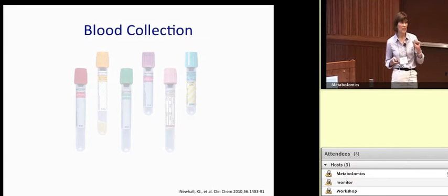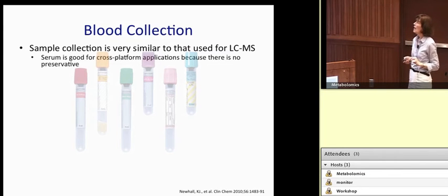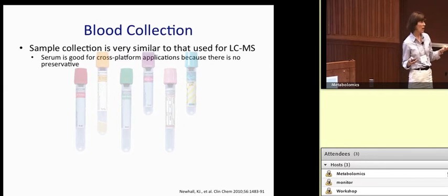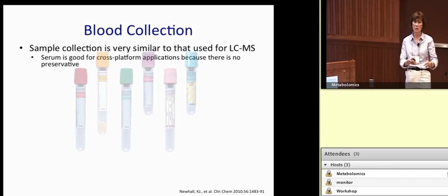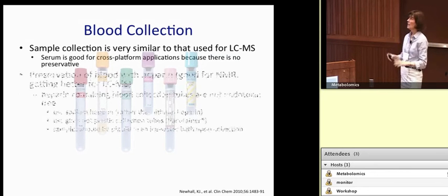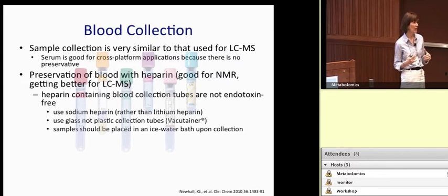A few things about sample collection — essentially the principles are the same for NMR as for LC-MS, with some minor differences. Serum is a great cross-platform biofluid because there's no preservative in that sample, so we can take a serum sample, run it in NMR, and also run that same sample or a technical replicate in LC-MS fairly straightforwardly. Where things can get murky is we like heparin-preserved plasma in whole blood for NMR, and that can be somewhat problematic for LC-MS, although we've been working on trying to remedy that.